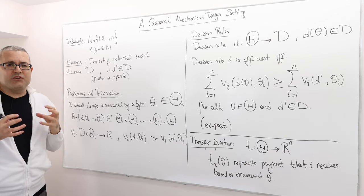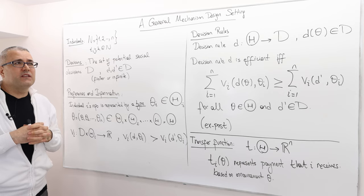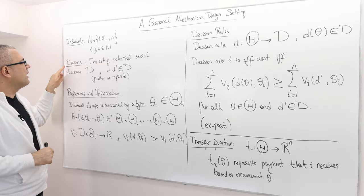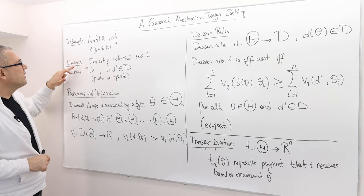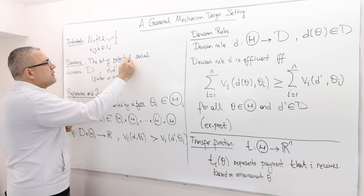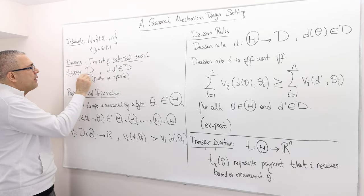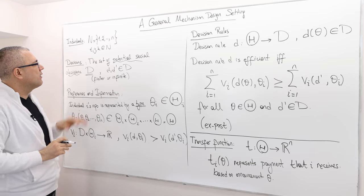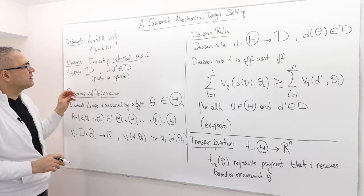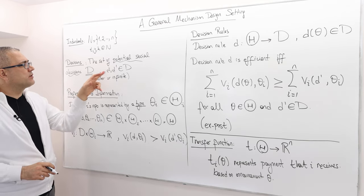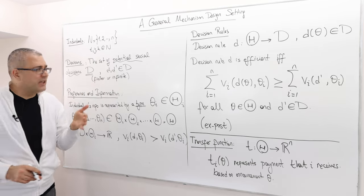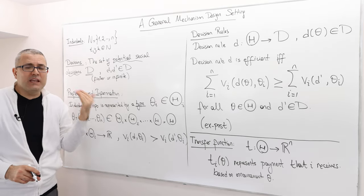We define decisions — you can think of decisions as alternatives. The set of all potential social decisions is denoted by capital D. So D contains all possible social decisions. A generic element of capital D is d or d prime. Depending on the application, D can be finite or it can be infinite.